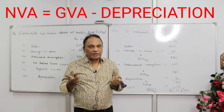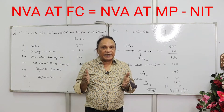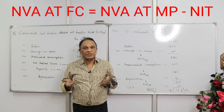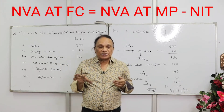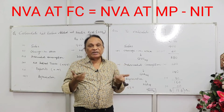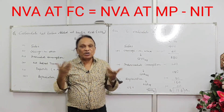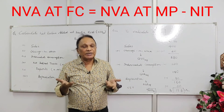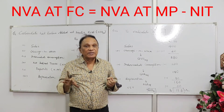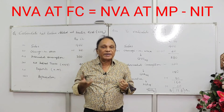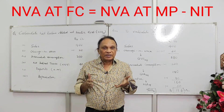From net value added at market price, if you subtract NIT — net indirect taxes, that is indirect taxes minus subsidies — you get net value added at factor cost. The net value added at factor cost of all firms within the domestic territory is called NDP at market price — net domestic product. If it is one firm, it's NVA.